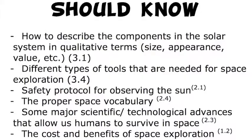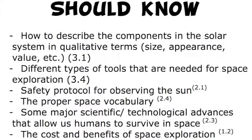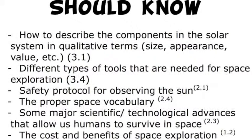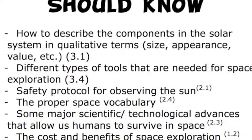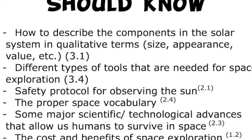Then there were should knows — things I thought the kids would find interesting and should know, but I wasn't expecting everything in this section to be memorized. Should knows included: how to describe components of the solar system by size, appearance, and value; different types of tools needed for space exploration; safety protocol for observing the sun; proper space vocabulary — though that probably should have been a must know; major scientific and technological advances that allow humans to survive in space; and the costs and benefits of space exploration.